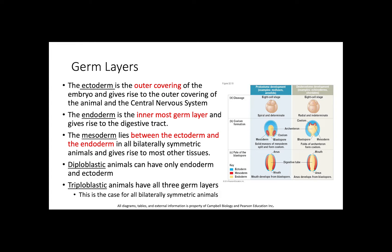Now for the actual germ layers. The ectoderm is the outer covering of the embryo and gives rise to the outer covering of the animal and the central nervous system. The endoderm is going to be the innermost germ layer and gives rise to the digestive tract of the animal. The mesoderm lies between the ectoderm and the endoderm in all bilaterally symmetric animals and gives rise to most other tissues.